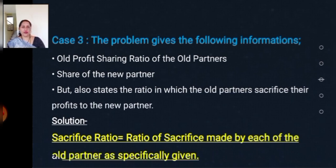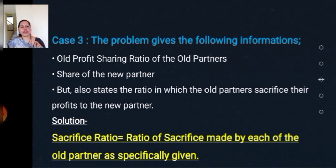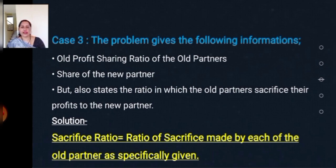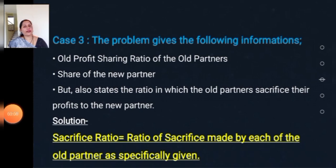Case three: the problem gives the old profit sharing ratio of all partners, the share of the new partner, and also specifically states the ratio in which all partners sacrificed their share of profit to the new partner. Since the sacrifice ratio is defined as the ratio in which existing partners are sacrificing their share of profit to the new partner, and this ratio is directly given in the problem, you need not do any calculation — straight away whatever is given in the question can be taken as the sacrifice ratio.